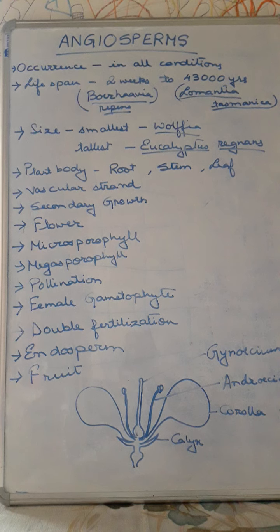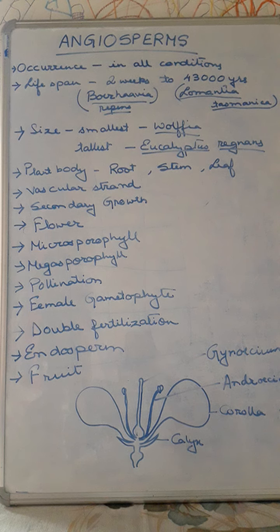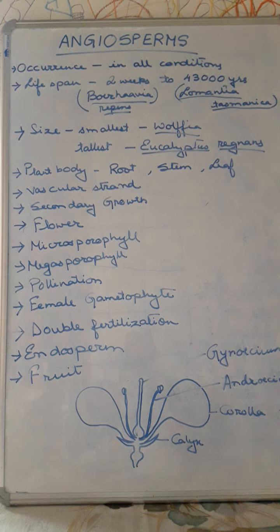There is a proper vascular system — xylem and phloem are present, possessing all the main cells. Xylem consists of four cells: tracheids, vessels, xylem parenchyma, and xylem fiber. Phloem consists of sieve tubes, sieve plates, phloem parenchyma, and phloem fiber. Xylem conducts water and minerals, and phloem conducts food.